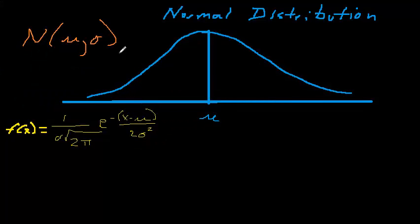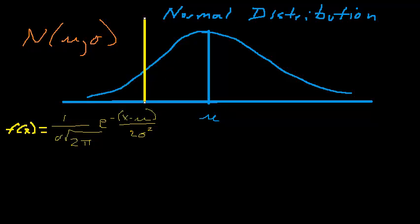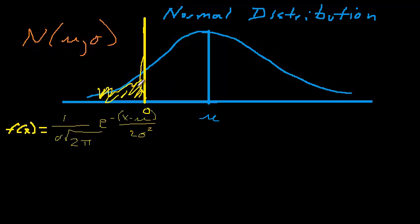There is one problem we have to deal with in revenue management when using this function. If this is zero — the y-axis — somewhere below the mean, the normal distribution has a positive probability of events occurring below zero. If we're using this to model demand, the normal distribution will result in positive probability of negative demand. To deal with this, we truncate the distribution, creating a spike at the axis — a mixed discrete and continuous distribution.